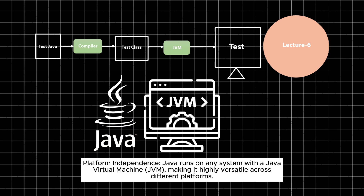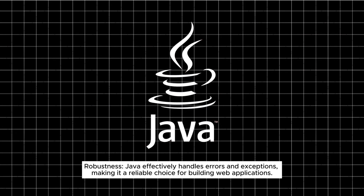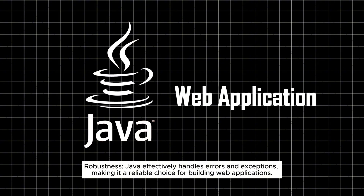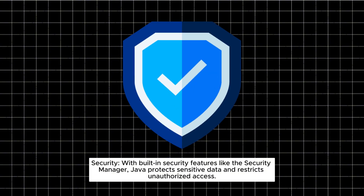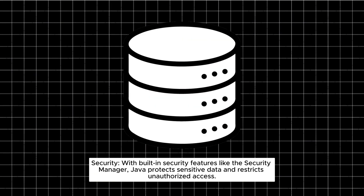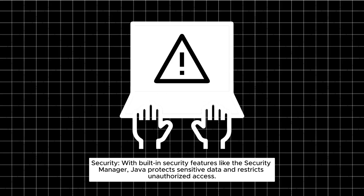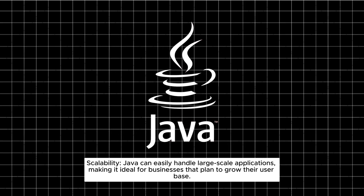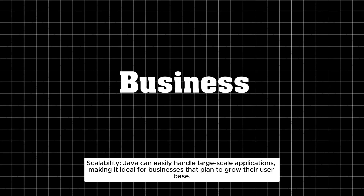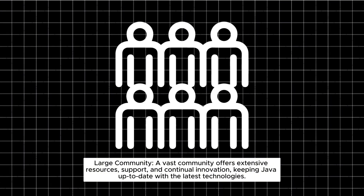Robustness: Java effectively handles errors and exceptions, making it a reliable choice for building web applications. Security: with built-in security features like the security manager, Java protects sensitive data and restricts unauthorized access. Scalability: Java can easily handle large-scale applications, making it ideal for businesses that plan to grow their user base. Large community: a vast community offers extensive resources, support, and continual innovation, keeping Java up to date with the latest technologies.